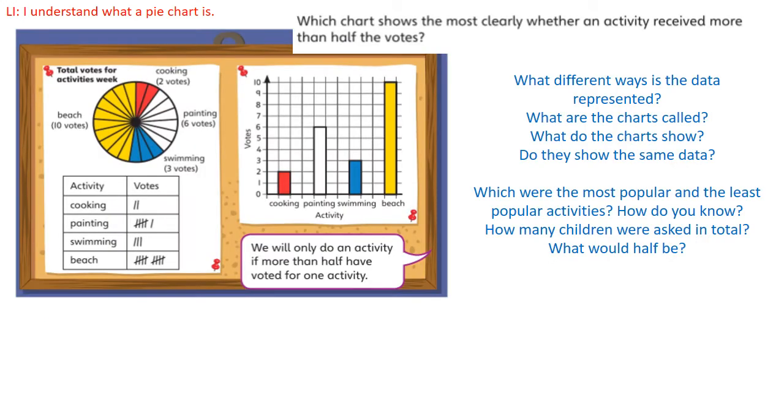So let's get on with our first problem. Which chart shows the most clearly whether an activity received more than half the votes?